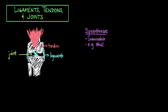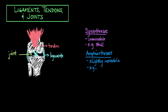The next type of joint is called an amphiarthroses. Amphi meaning it's both stiff but also slightly movable. An example of amphiarthroses would be your vertebral joints.